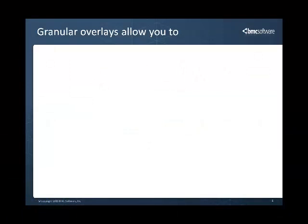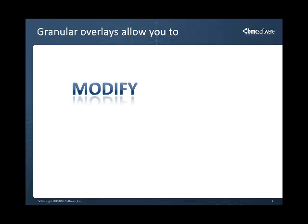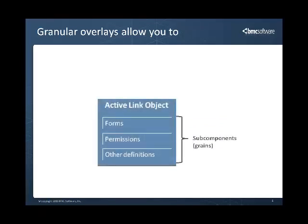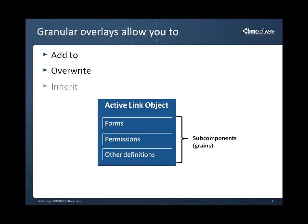AR System objects now use granular overlays, which enable you to modify some aspects of an origin object while permitting other aspects to be inherited from the object. A grain is a subcomponent of an object. With granular overlays, you can add to some of the grains of an object from the origin object, overwrite other grains, and inherit still other grains. Using granular overlays minimizes how much you must reconcile after applying upgrades or patches.